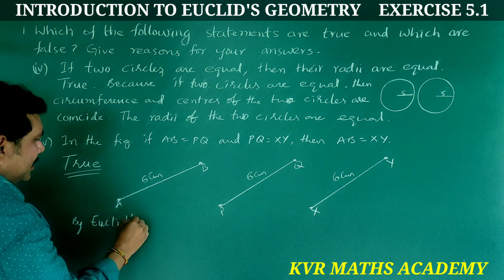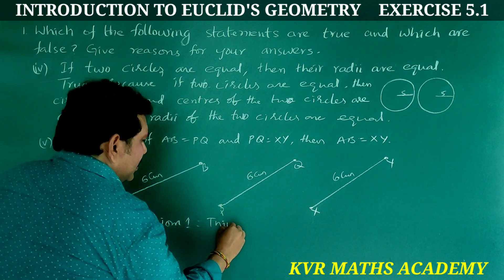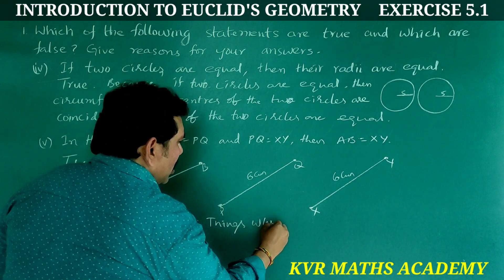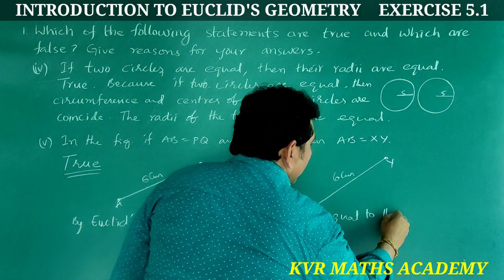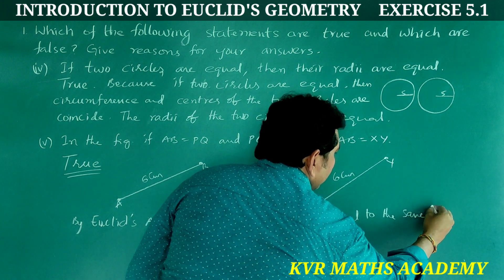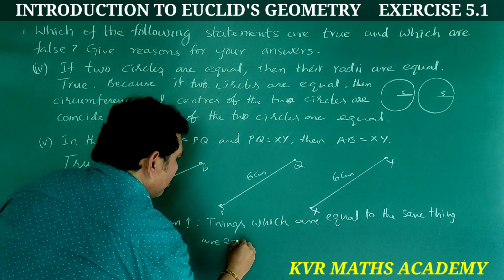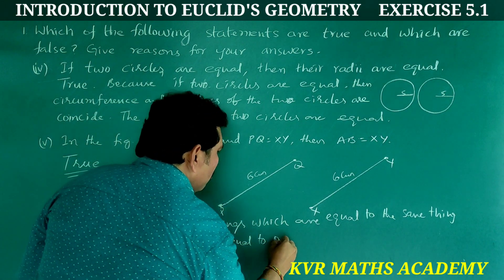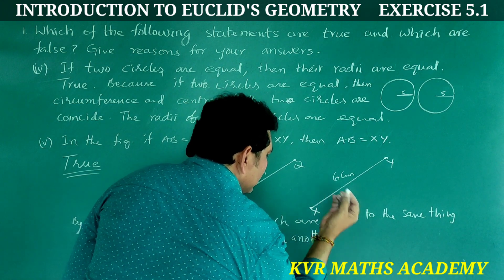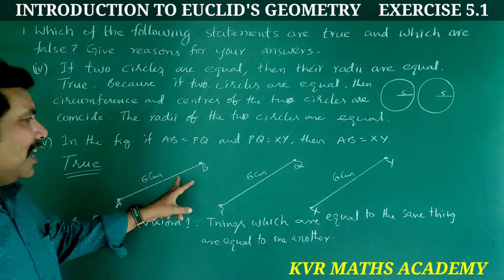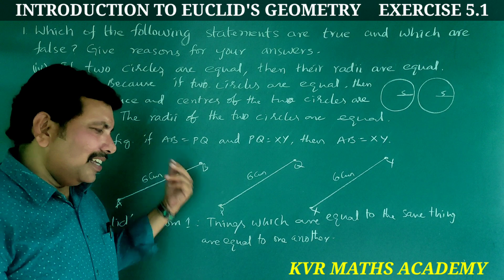By Euclid's Axiom 1: things which are equal to the same thing are equal to one another.